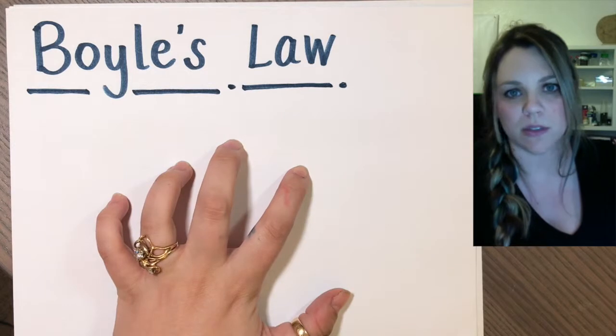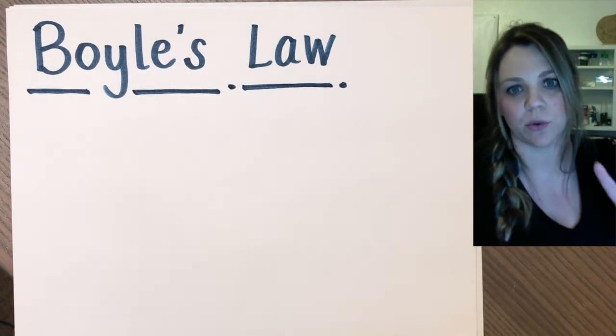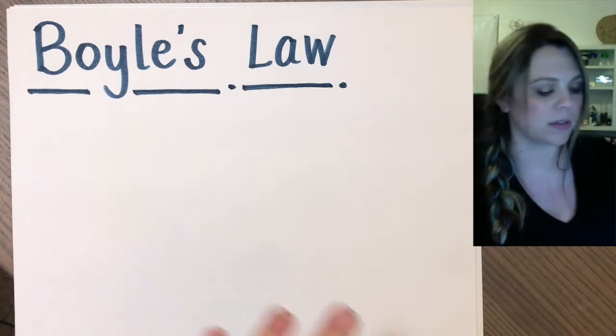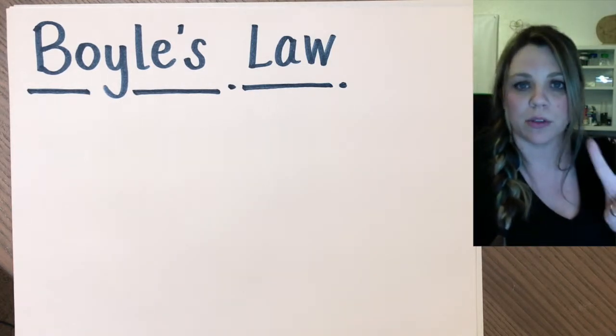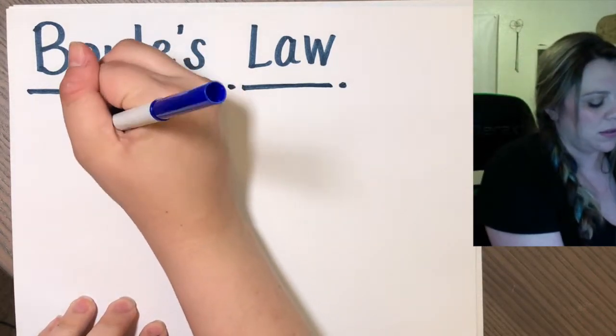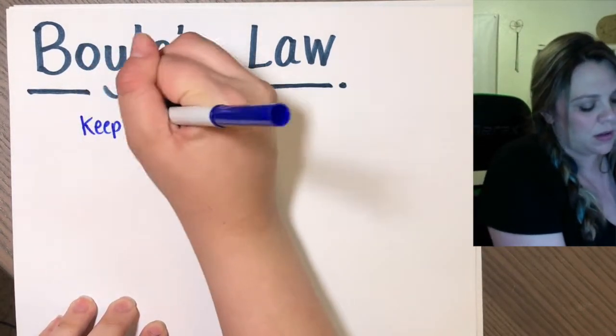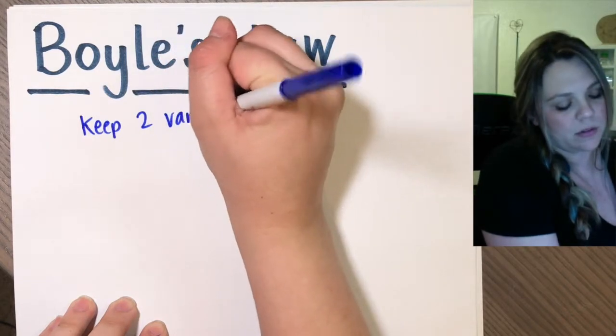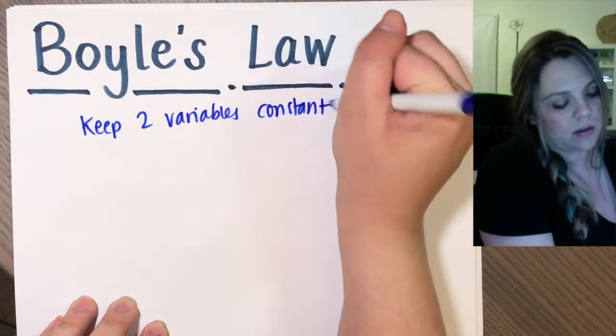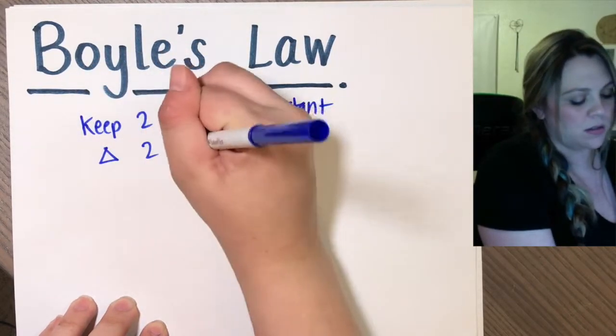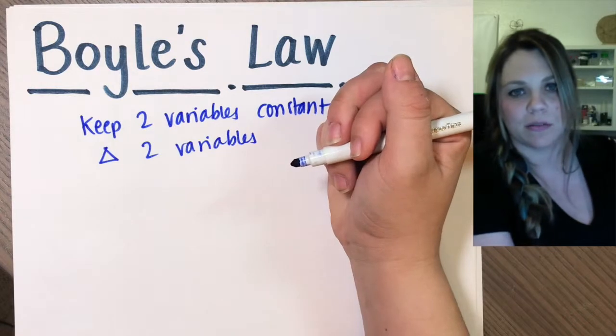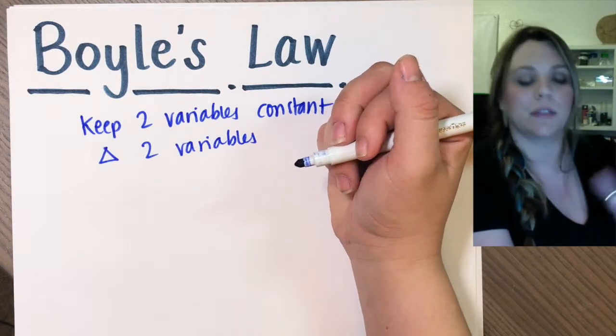Almost all of these laws that we're going to look at, there's four different laws. We have Boyle's, Charles, Gay-Lussac, and Avogadro. So we're starting with Boyle's. All of them only deal with two variables at a time. I am going to keep two variables constant and I'm going to change two variables, or see how they kind of interact with each other, see how they affect each other.